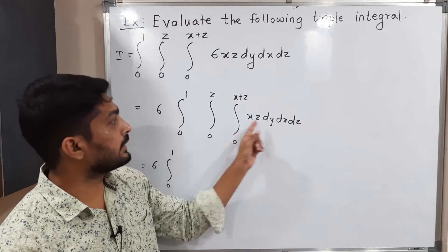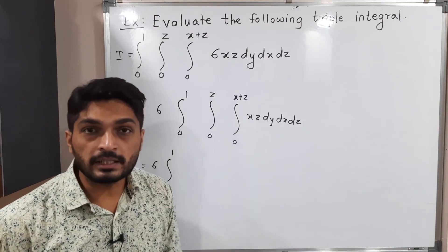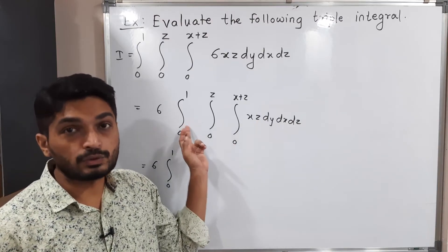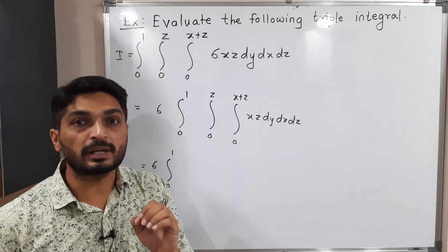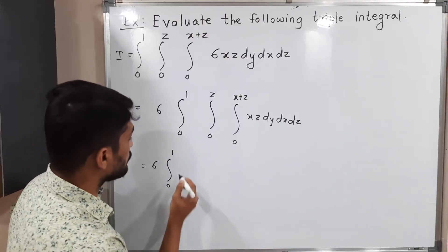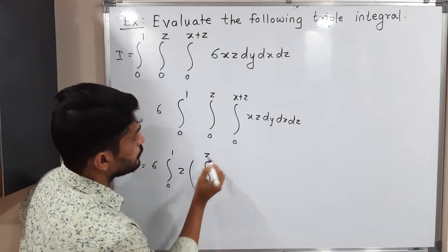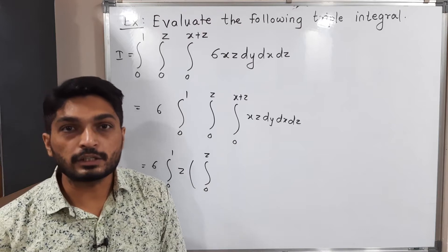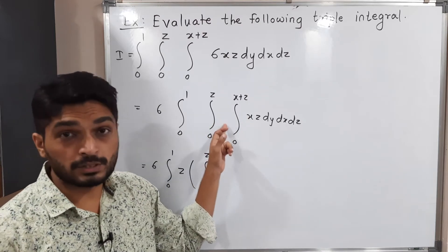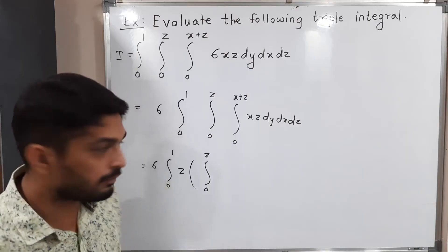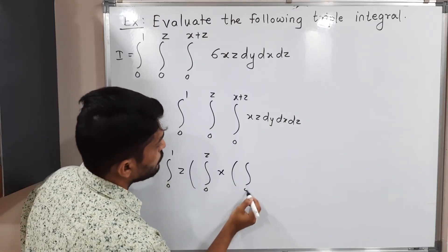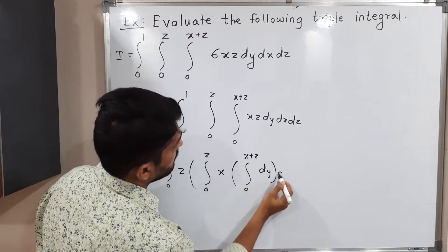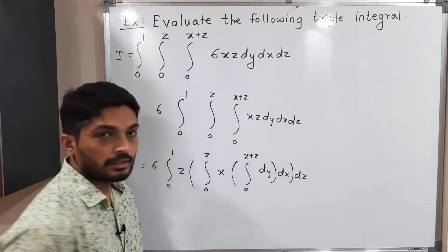Since z is also a constant for the middle integral, it comes outside. So we write z here, then integration 0 to z. After that, since the inner integration is with respect to y, x is also constant for the inner integral and comes outside — x will be a variable in the middle integral. So the innermost integration is the integral from 0 to x plus z of dy, then dx, then dz.